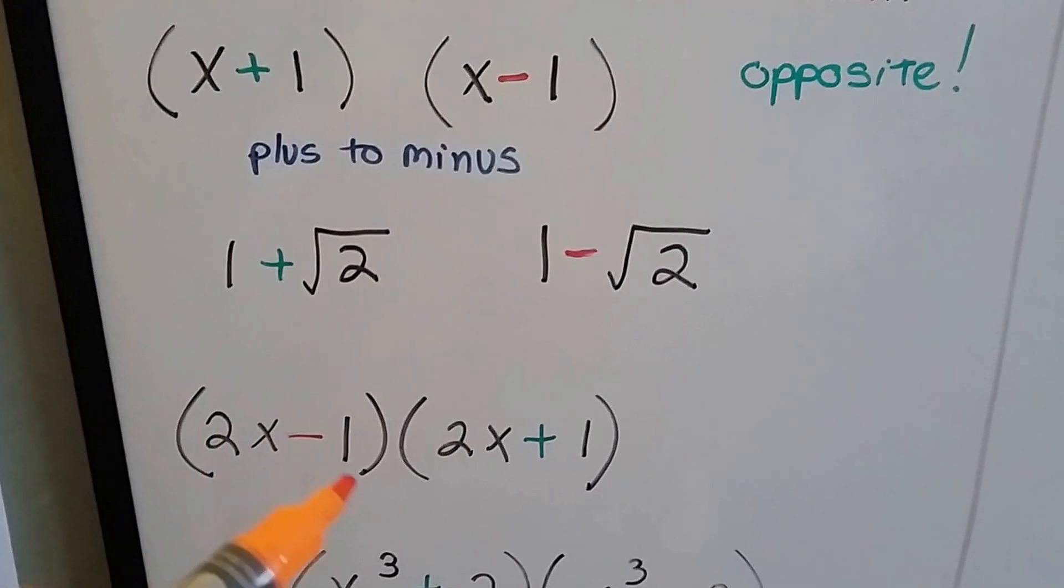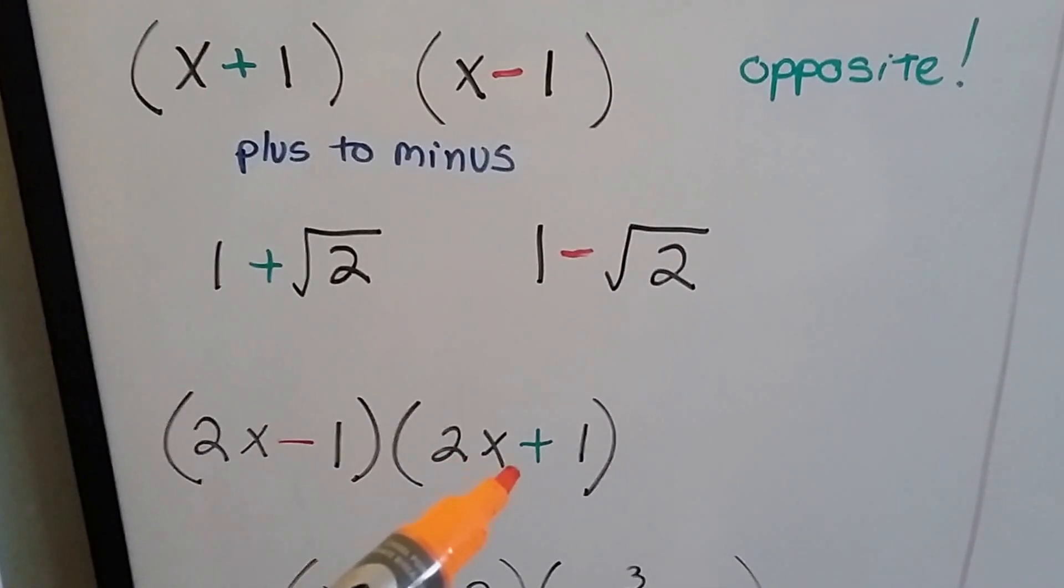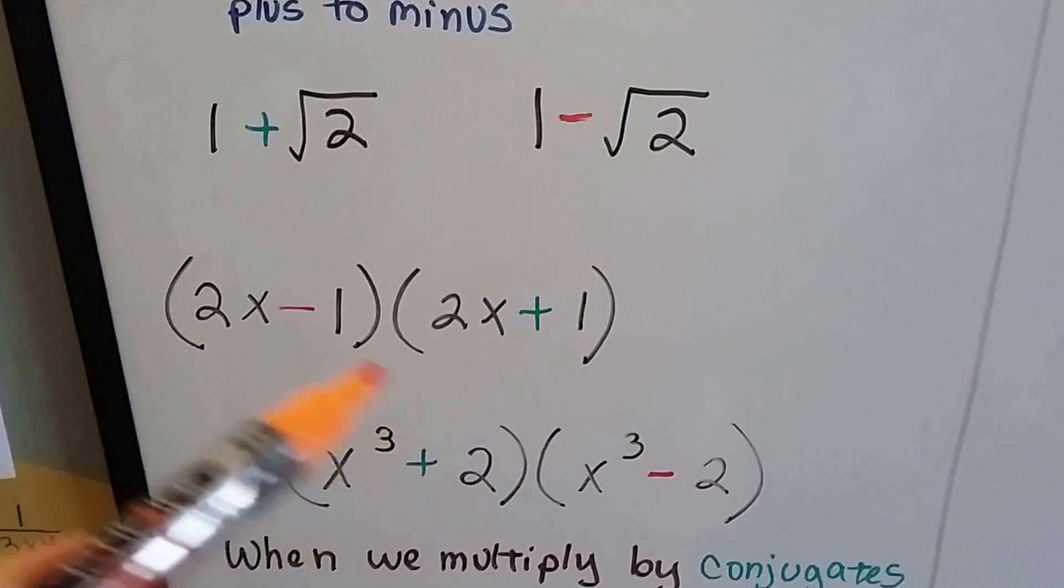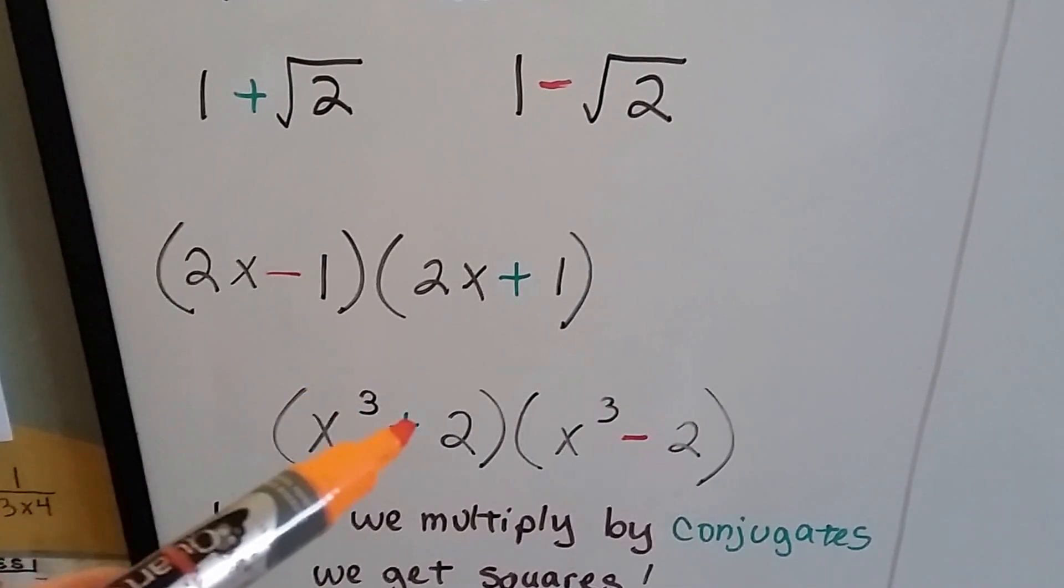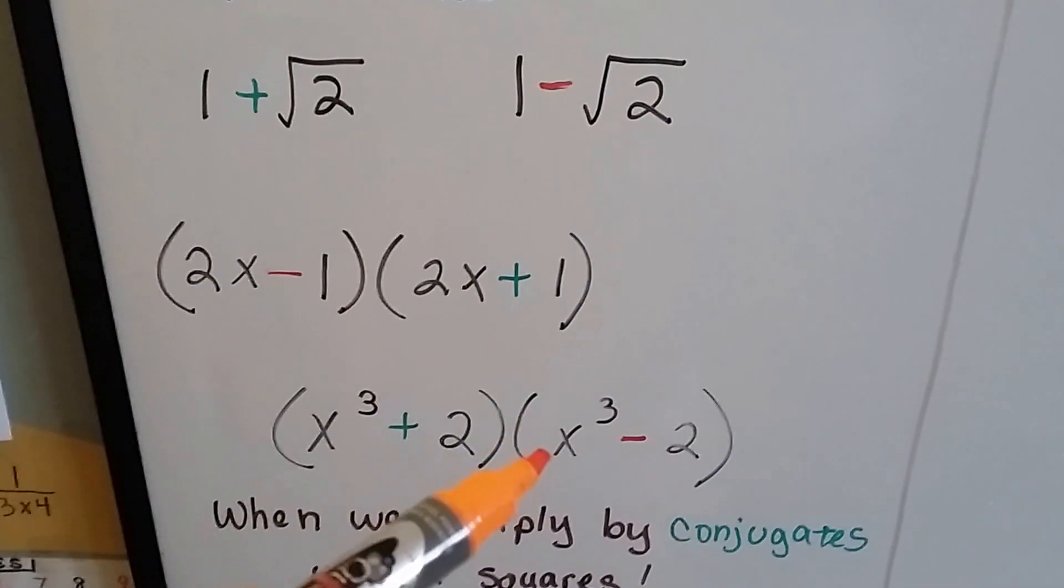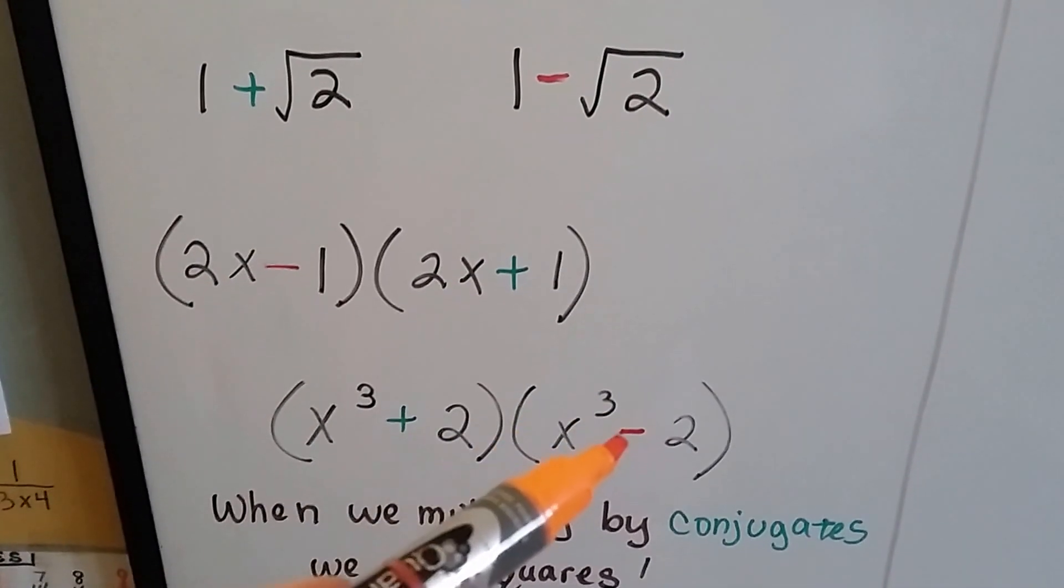For 2x minus 1, we would have 2x plus 1. See? It's just changing the sign. If we had x cubed plus 2, we would get x cubed minus 2.